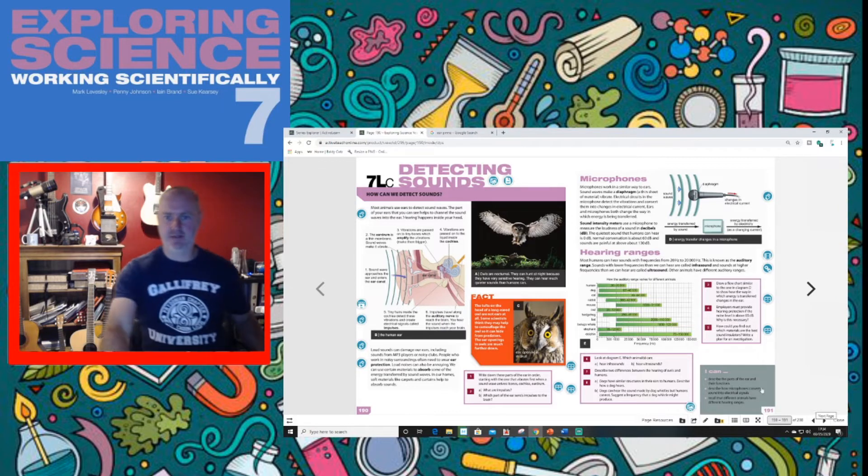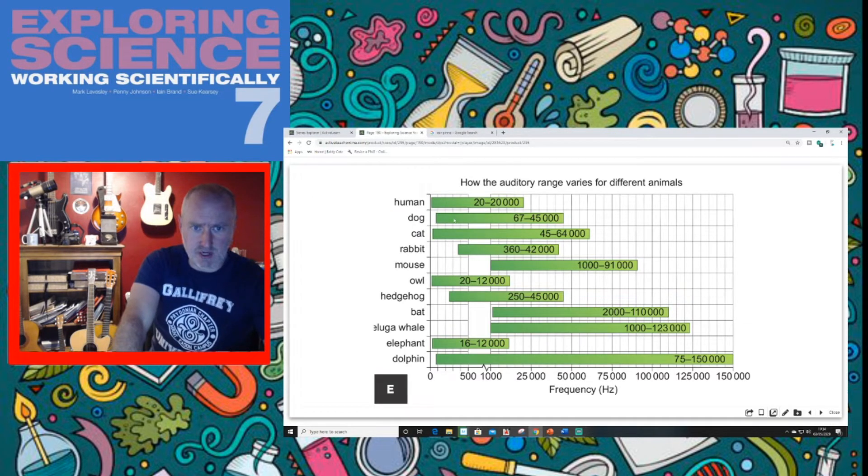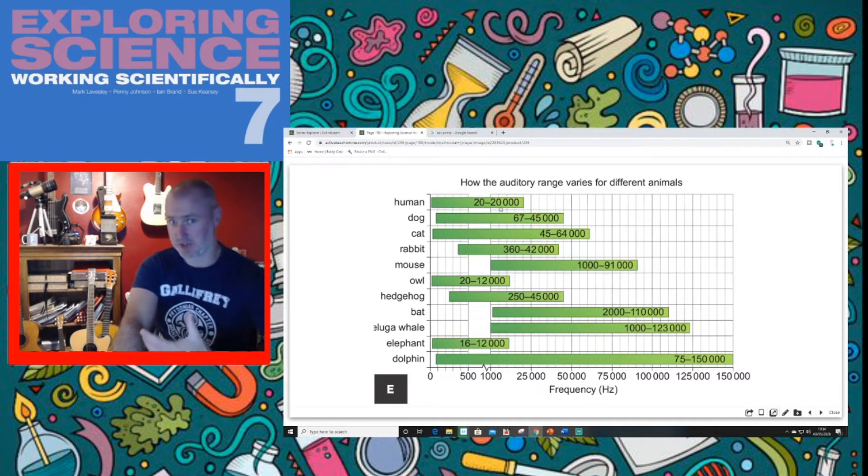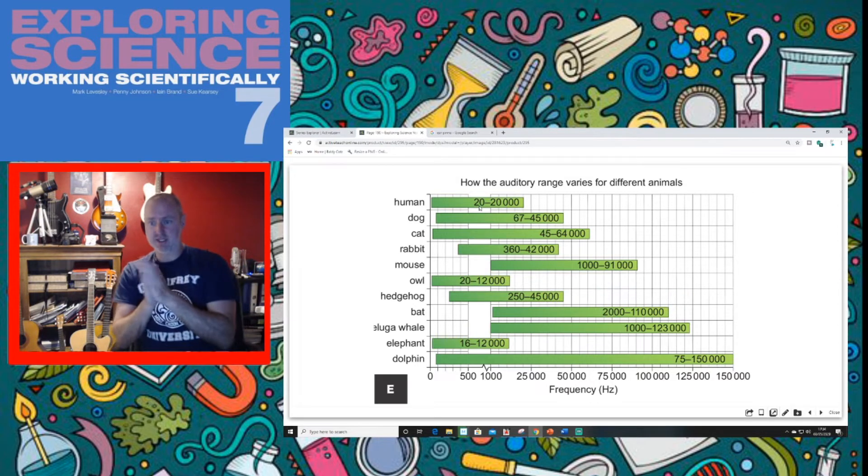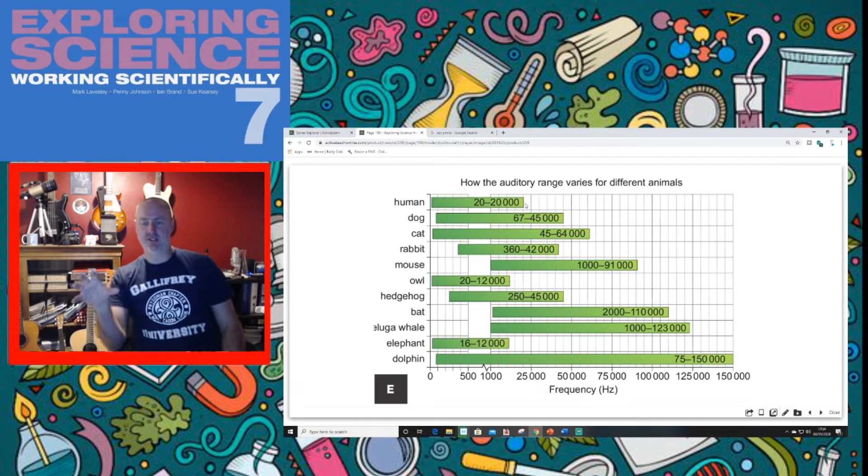Now, with humans, our ears - if I bring this up here - humans are here at the top. Our ears are designed, at birth anyway, to be able to hear frequencies as low as 20 hertz, so something vibrating 20 times a second, all the way up to something vibrating at 20,000 times a second.